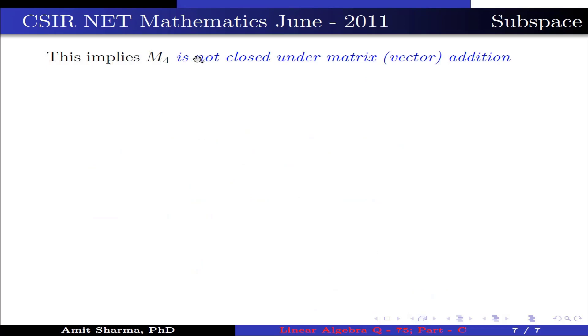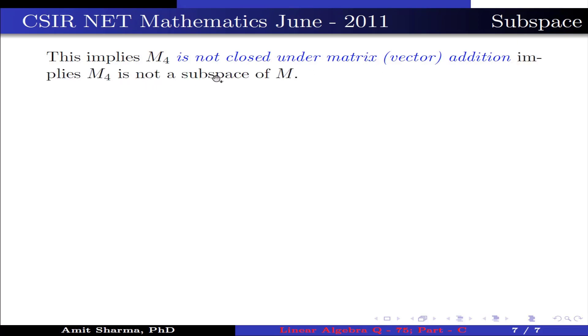This implies M4 is not closed under matrix addition. This implies M4 is not a subspace of M. Therefore, option 4 is wrong.